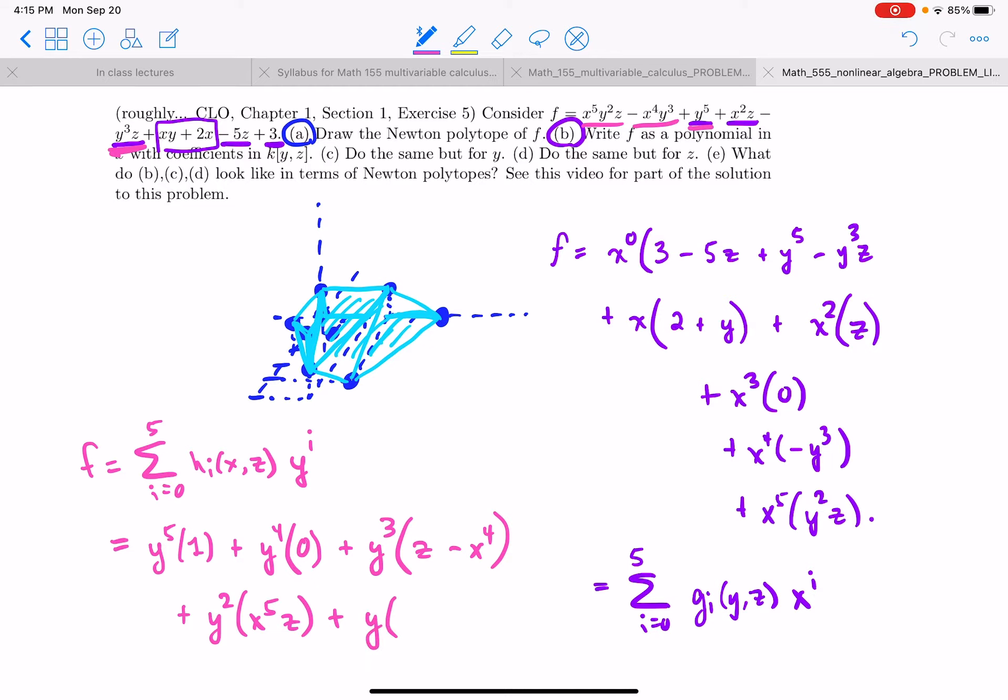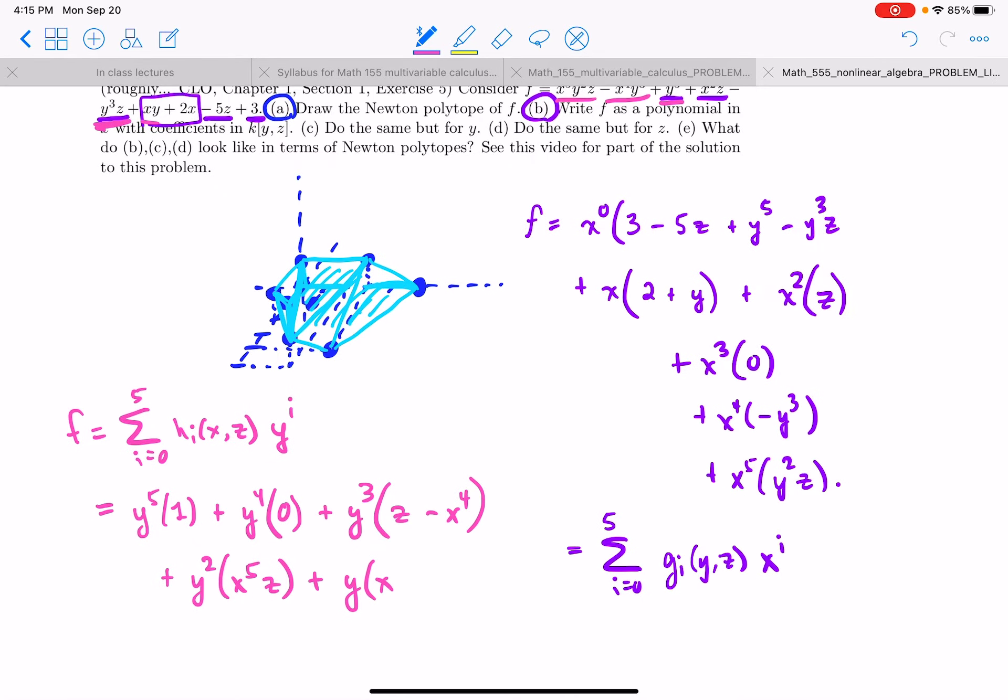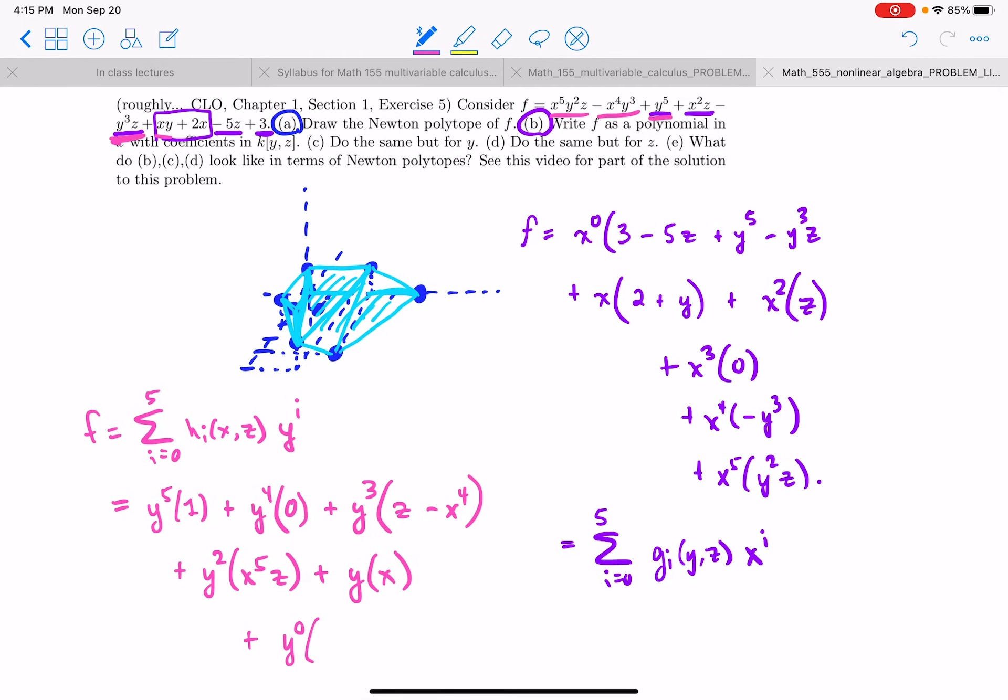Plus y times. Now what are the terms of y and x? And that's it, I believe. And then finally we have y to the zero which is a constant term in y. And there we have x squared z. We have plus 2x minus 5z plus 3. Okay. So that finishes b. Or no, sorry, c.